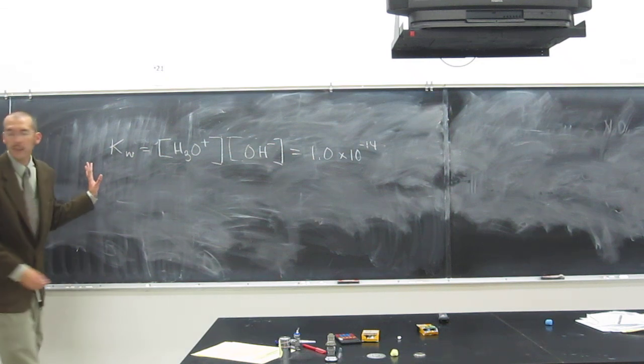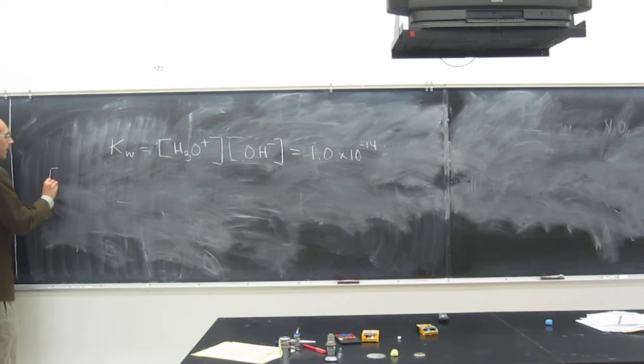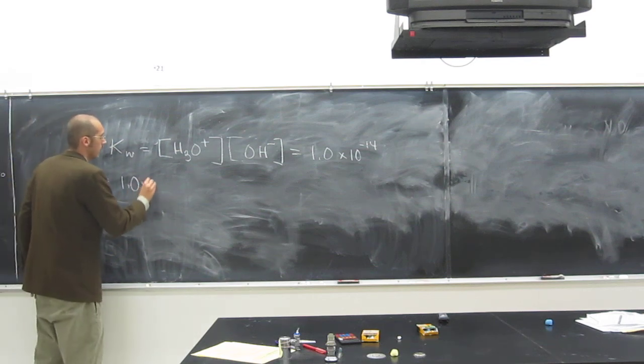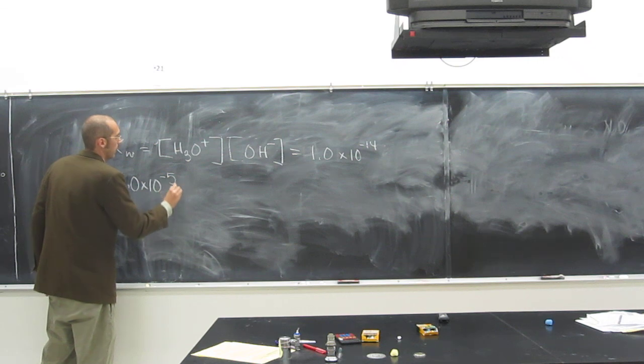The other thing you know, the problem gives you, it says that you know the H3O+ concentration. And that equals 1.0 times 10 to the negative 5th molar.